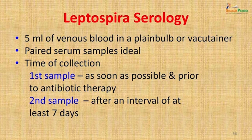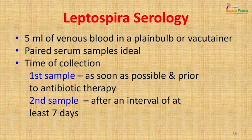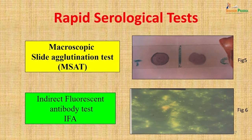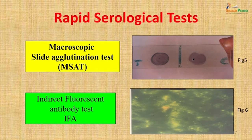Serological tests were attempted for leptospira diagnosis. Five ml of venous blood was collected in a plain bulb or vacutainer and serum was separated. Ideally paired serum samples should be obtained — the first as soon as possible and prior to antibiotic therapy, and the patient was advised to return for a second sample after at least 7 days. The macroscopic slide agglutination test was performed in-house and showed clumping of organisms in the well to which antigen was added, versus the control which showed no agglutination. The macroscopic slide agglutination test was positive using leptospira antigen grown in-house.